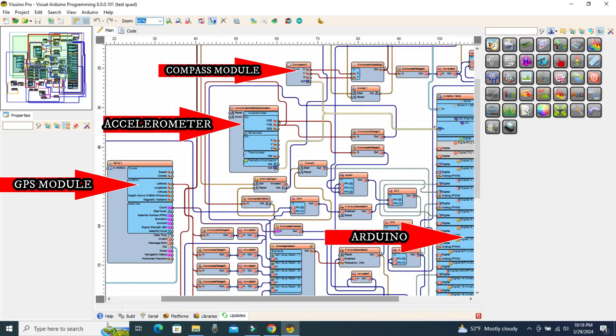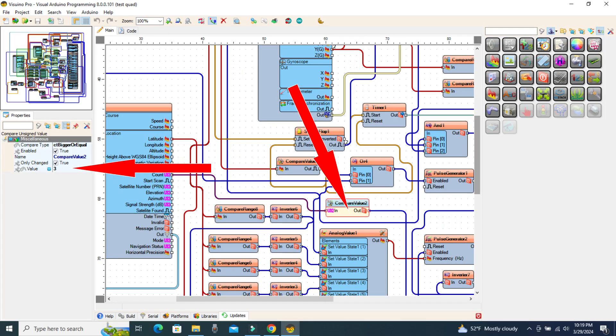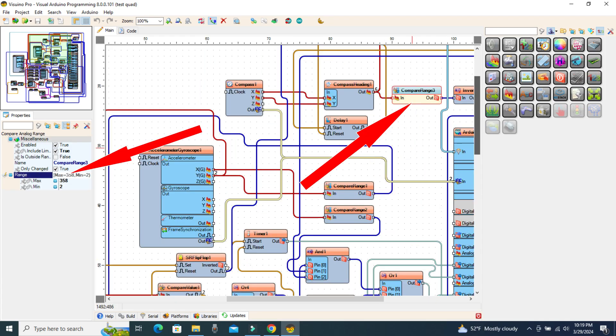The Compare Unsigned Value component is set to three or higher. That is, when the device receives a minimum of three satellites, it is ready for operation.